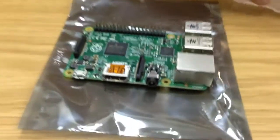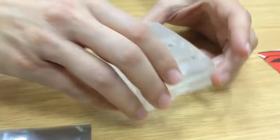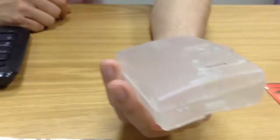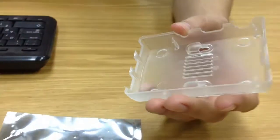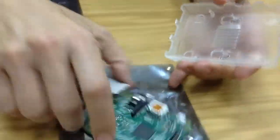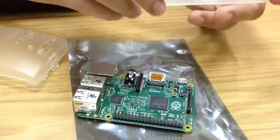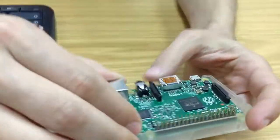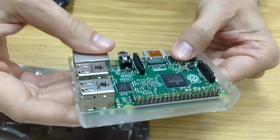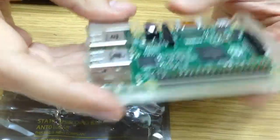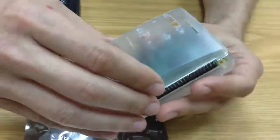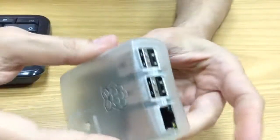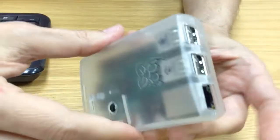Alright, so I happen to have this plastic case which fits this Raspberry Pi board. So let's put it there. It just fits in just like that and you push it and once you hear the click we're in. Let's put it like that and it's locked.